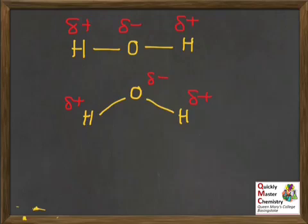As before, we need to decide if the centre of delta plus in the molecule is superimposed on the centre of delta minus or not. Remember, superimposed simply means in the same place as. The centre of delta minus is fairly obvious — there is only one delta minus on the oxygen. What about the centre of delta plus? The centre of the charge is simply the point in the molecule which is equidistant — the same distance from both of the delta plus charges — and that's going to be here, halfway between the two hydrogens. So the centre of delta plus is not superimposed on the centre of delta minus. The two charges don't cancel out, therefore, so this is a polar molecule. The molecule as a whole does have a permanent dipole.